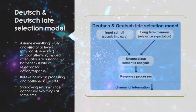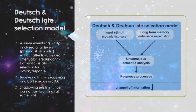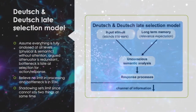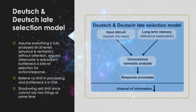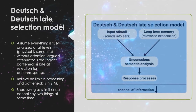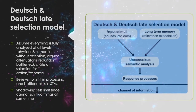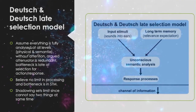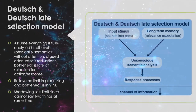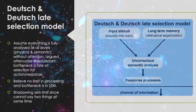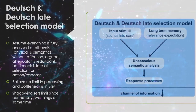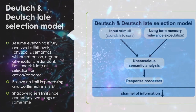Deutsch and Deutsch proposed their late selection model, which assumed everything was fully analyzed at all levels — physically and semantically — without attention, and this argued that the attenuator is redundant. The bottleneck was said to be late, at the selection for action or response, and it was believed that there was no limit to processing and no limit to the bottleneck in short-term memory. Shadowing sets a limit since individuals cannot say two things at the same time — they can only attend to one thing at any given time.